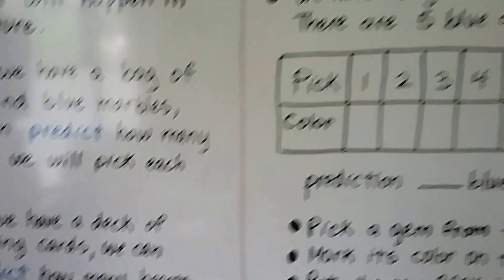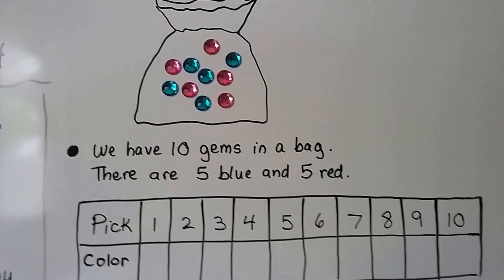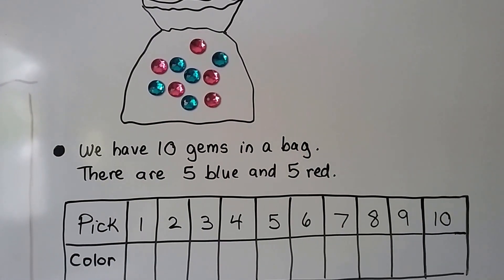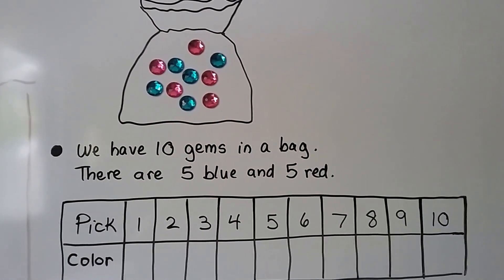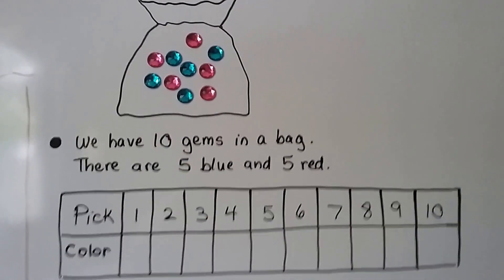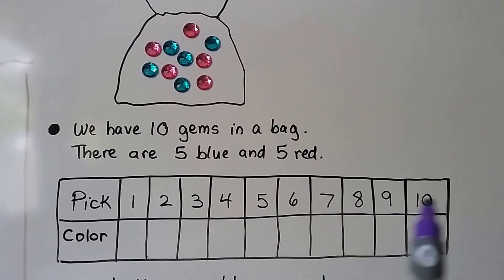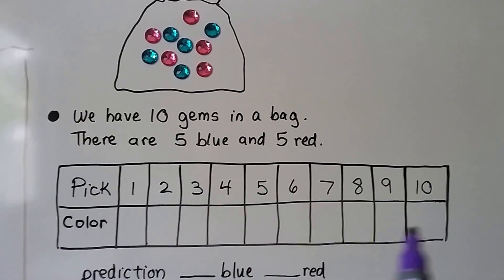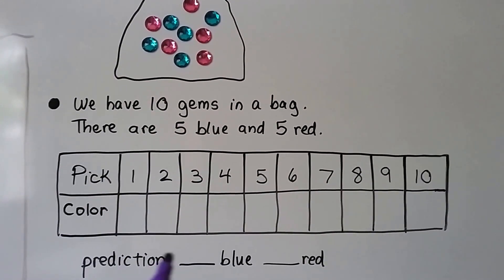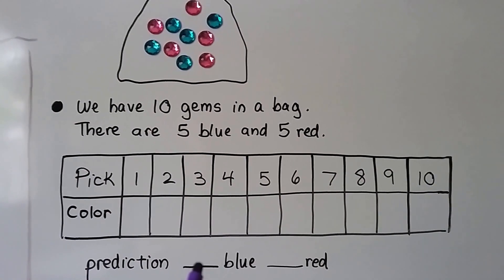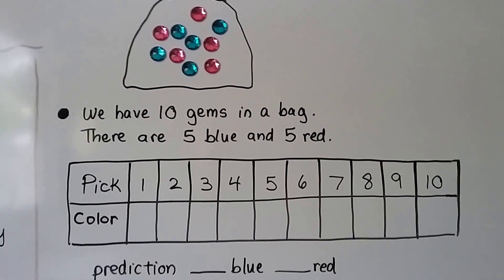So, here I have ten gems in a pretend bag, and there's five blue gems and five red gems. I made a chart and here's all the times we are going to pick and here's the color we will pick. So, we can make a prediction of how many blue ones and how many red ones we think we can pick.